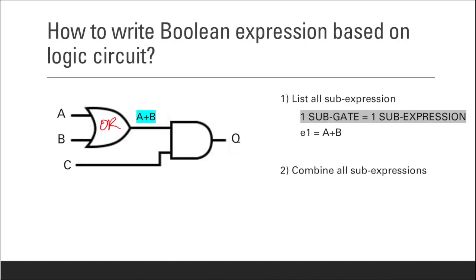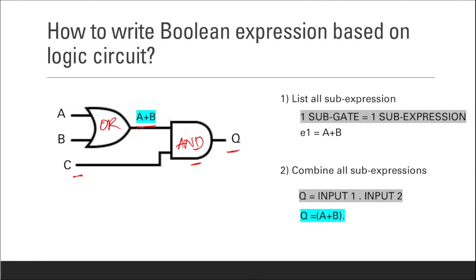Now we combine all sub-expressions to get the output. The final gate is an AND gate, so Q equals input one dot input two. Input one is the first expression A plus B, and input two is C, giving us Q equals (A plus B) dot C. That is the Boolean expression for this logic circuit.